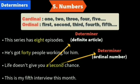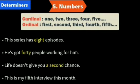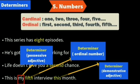In the sentence 'Life gives you a second chance,' you have 'a' which is an article. Two determiners can come together. 'This is my fifth interview this month' — we have 'my,' 'fifth,' 'this.' Three determiners are there. 'My' is a possessive adjective, 'fifth' is an ordinal number, and 'this' is a demonstrative adjective. In a sentence, you may have three or four determiners.